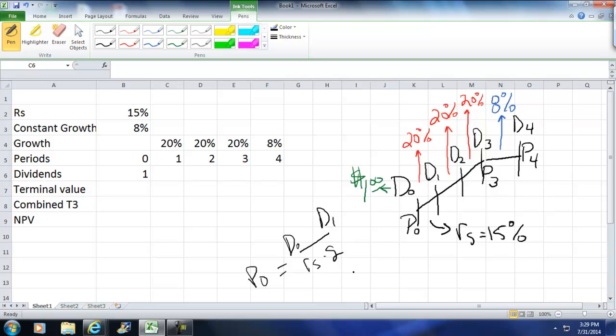And if it was a preferred stock, it's simple, it's just D forever, because it doesn't change, divided by RS, because there's no G, and that was P0. Now, the difficulty arises when you have a stock that's going to grow non-constant for a period of time, and if you take a look, it would make no sense to purchase or look for the value of a stock here, because you're saying, in essence, I want 15%, but they are going to give me 20%. Makes no sense.